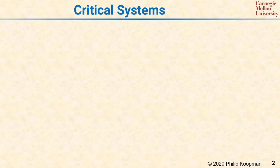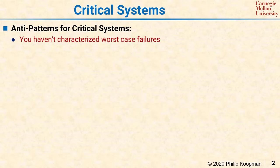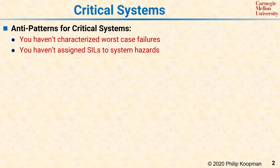If you are building a critical system, you could have a problem if any of the following apply. First, if you have not characterized the worst case failures for your system, then you're probably exposed to risks that you don't realize. Next, if you have not assigned safety integrity levels or the equivalent to the various hazards in your system, then you're probably not dealing with risk appropriately.